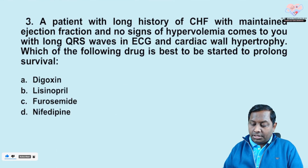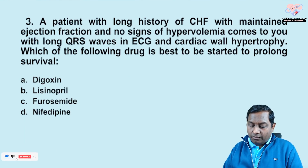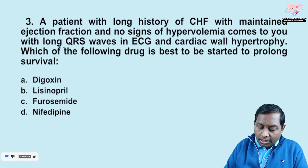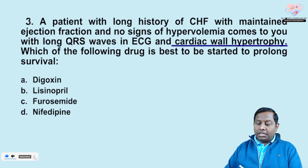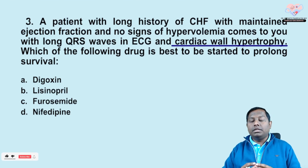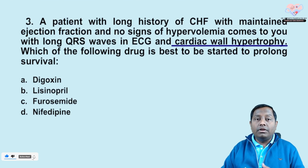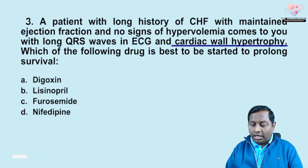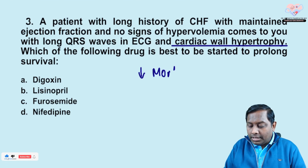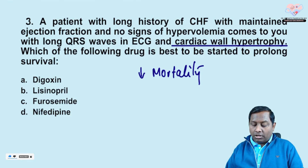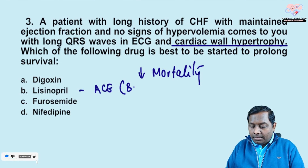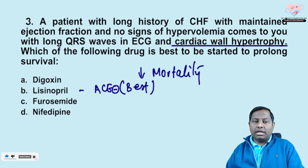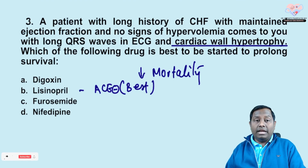Next question: a patient with a long history of congestive heart failure, maintained ejection fraction, no signs of hypervolemia, presents with a long QRS wave and cardiac wall hypertrophy. Which drug is best started to prolong survival? This is a favorite examiner question. Digoxin has no role in decreasing mortality. Lisinopril is an ACE inhibitor — ACE inhibitors are the best drugs for decreasing mortality. Furosemide is a loop diuretic used in acute scenarios. Nifedipine, a calcium channel blocker, has not shown mortality-related benefit.